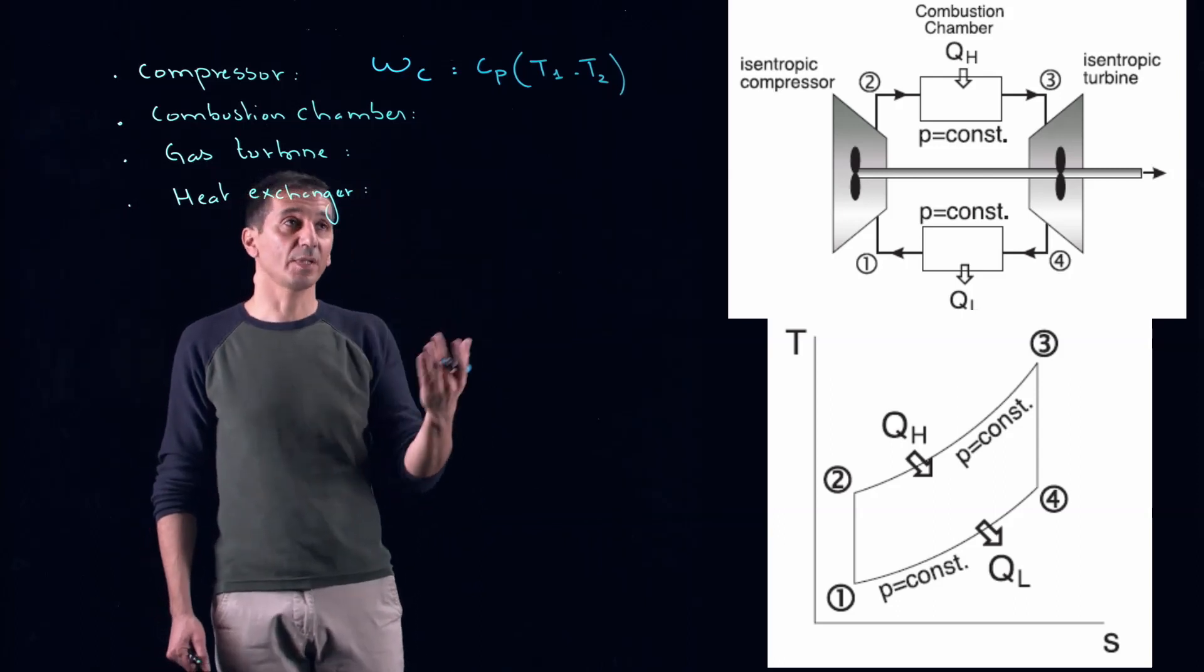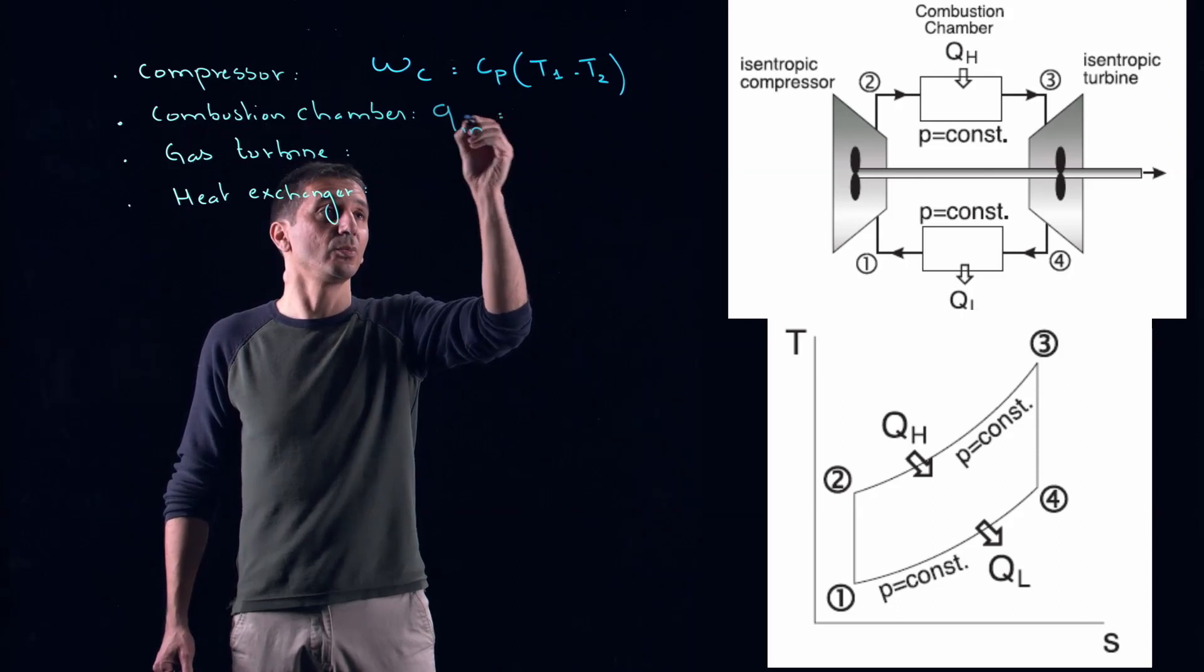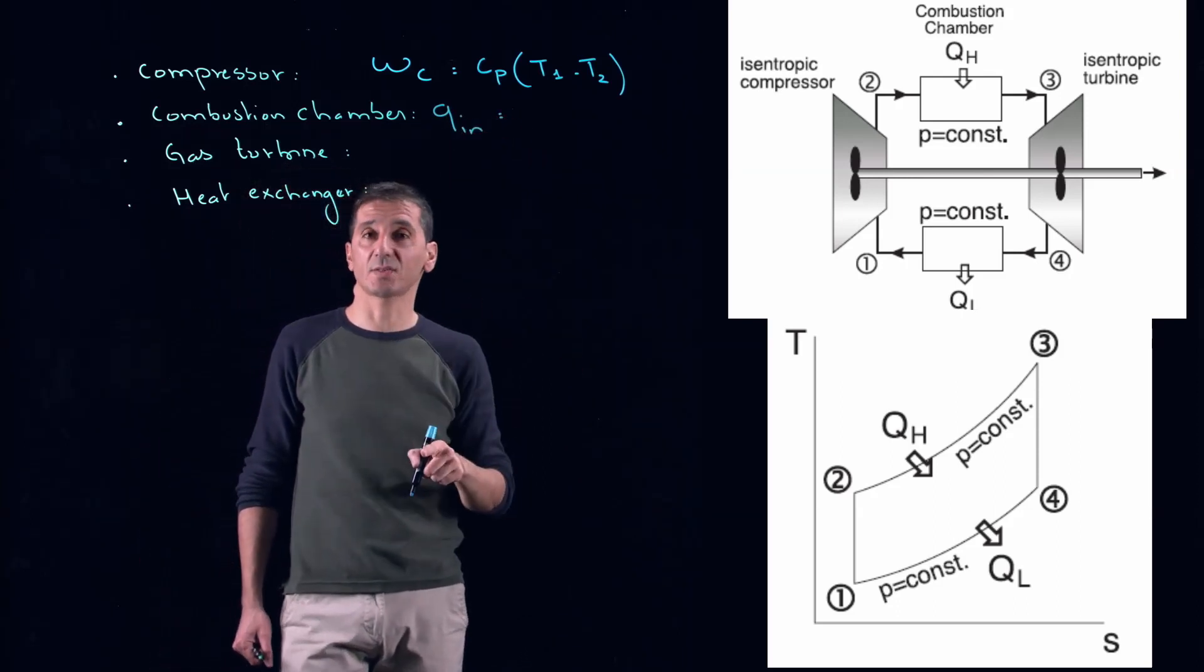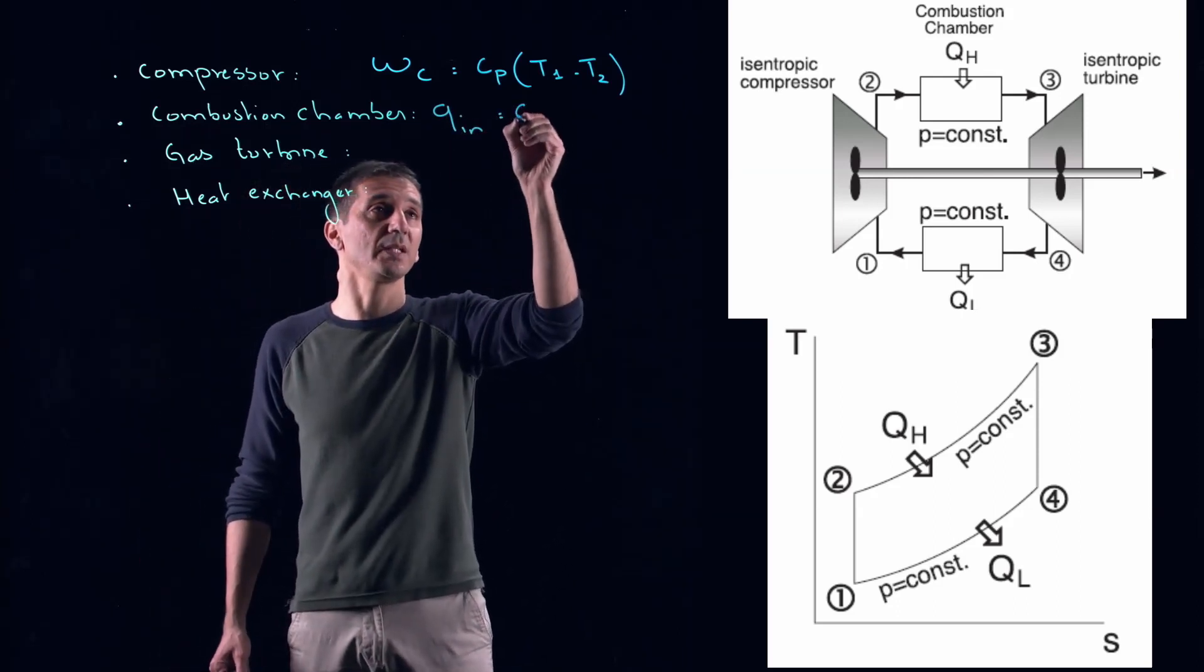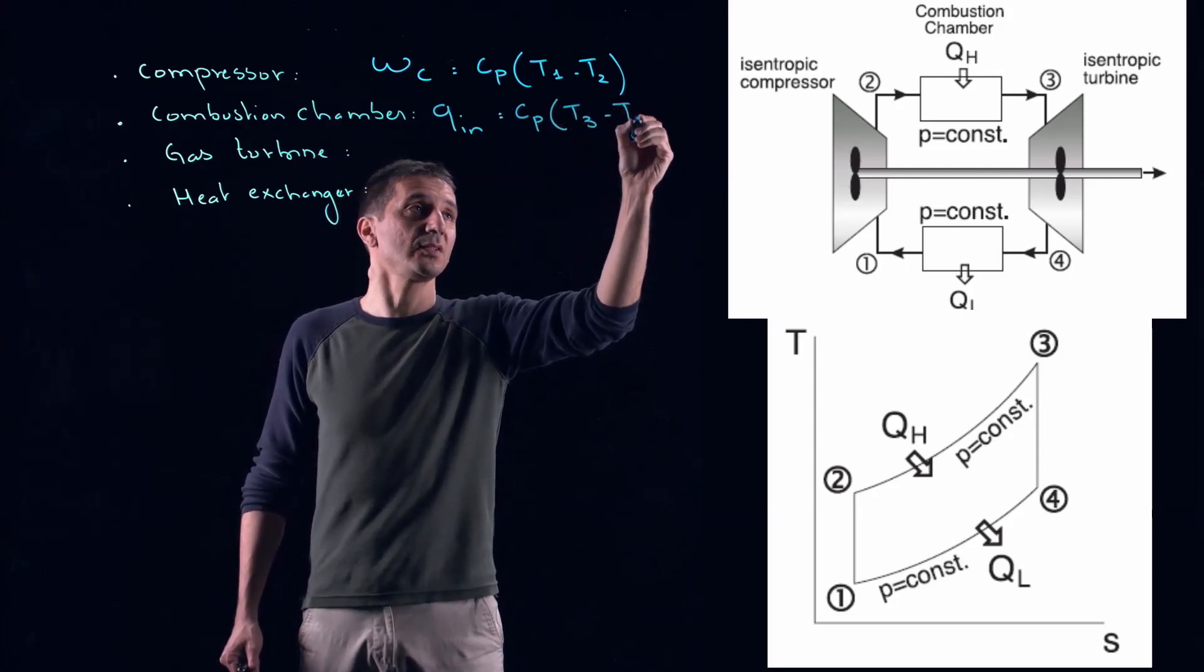In the combustion chamber, we are providing heat. So, Qin will be equal to H3 minus H2 or Cp T3 minus T2.